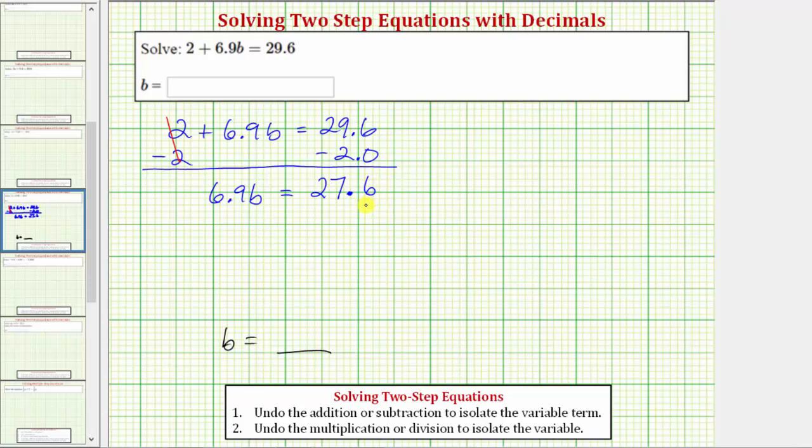And therefore the second step in order to solve for b is going to be to undo this multiplication by performing the inverse or opposite operation. In order to undo multiplying by 6.9, we will now divide both sides by 6.9.